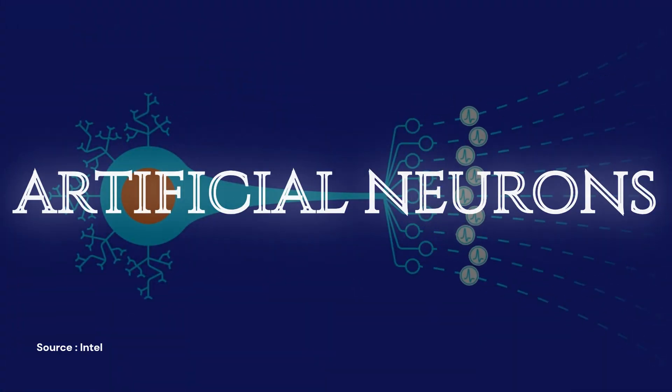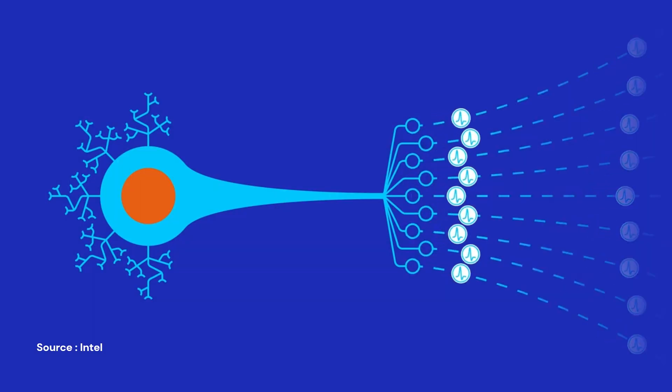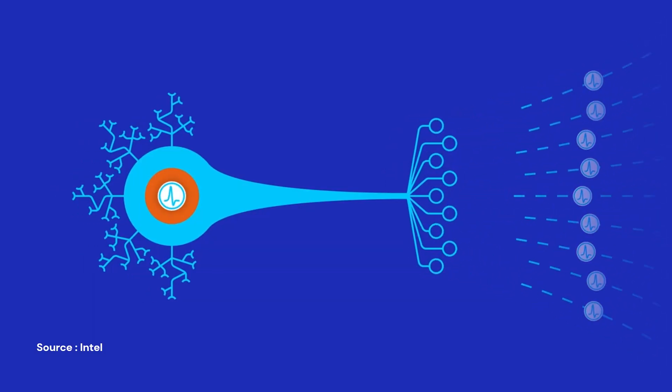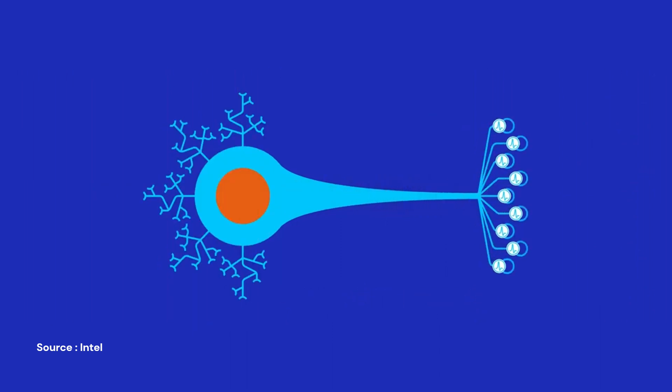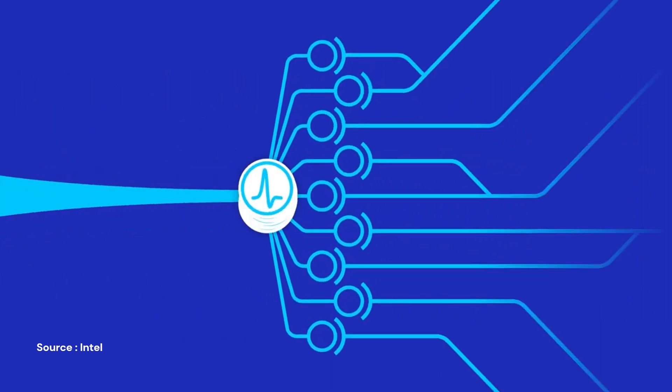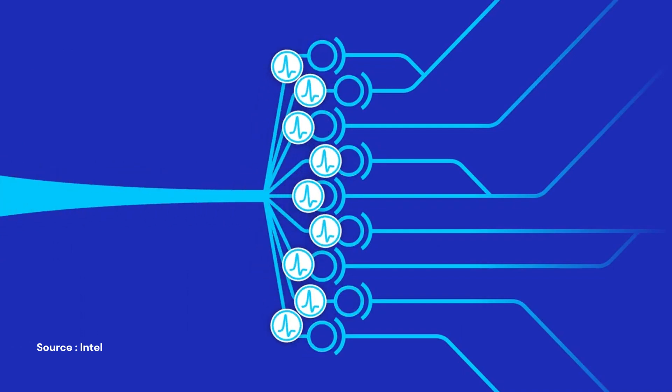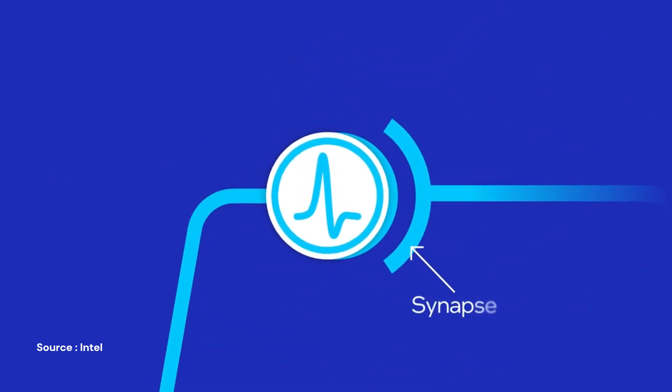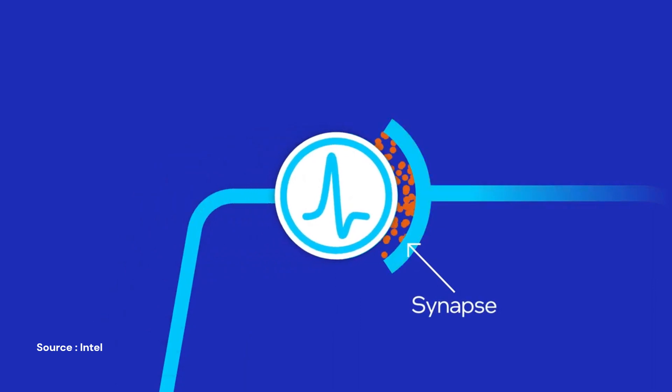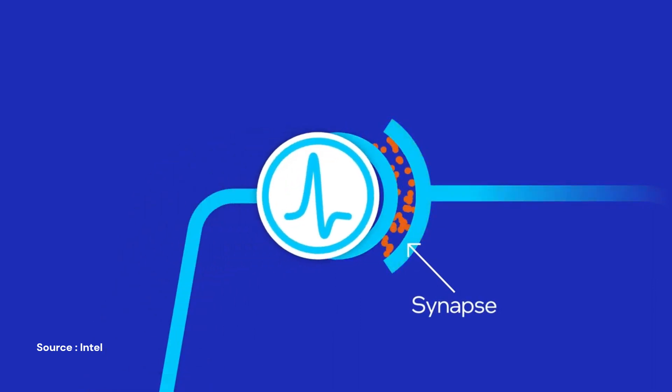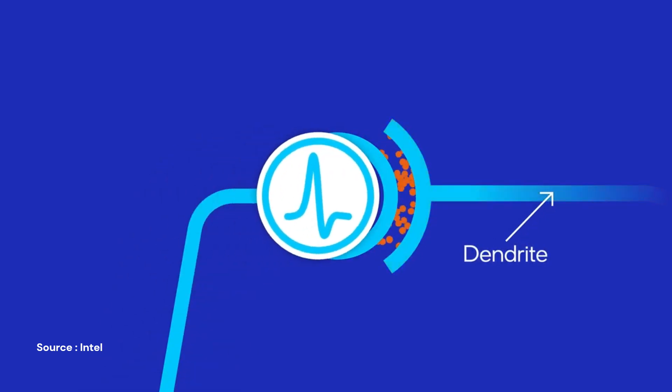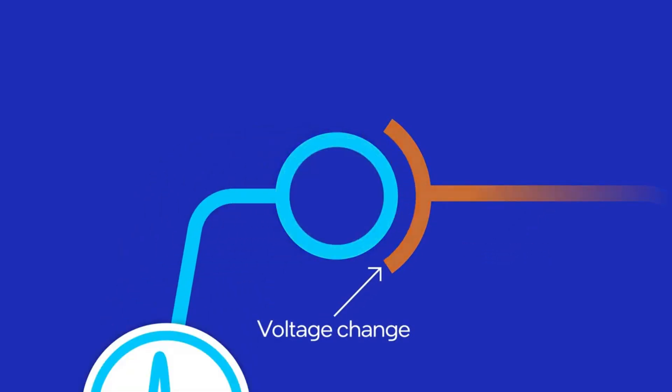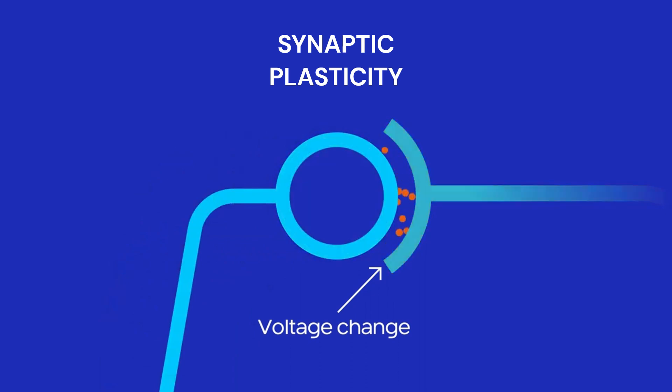Firstly, we have artificial neurons, the fundamental building block of neuromorphic systems. Unlike traditional computing, where signals are continuous, these neurons communicate through spikes, resembling the small burst of electrical activity in our brain. The connections between these artificial neurons are known as synapses. The strength of this connection, or the synaptic weight, is crucial. Similar to our brain, these connections should adapt over time and learn, a characteristic referred to as synaptic plasticity.